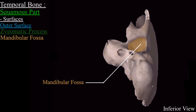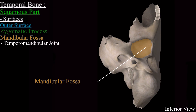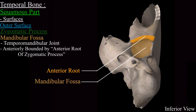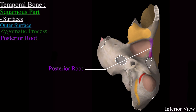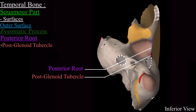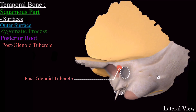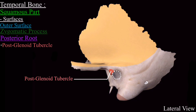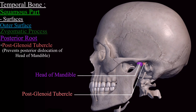This is the mandibular fossa where the temporomandibular joint is formed, and the head of the mandible articulates here with the temporal bone. The mandibular fossa is bounded anteriorly by the anterior root and laterally by the posterior root of the zygomatic process. The posterior root, most posteriorly, forms a tubercle called the postglenoid tubercle, present between the external acoustic meatus and the mandibular fossa. This postglenoid tubercle prevents posterior dislocation of the head of the mandible.